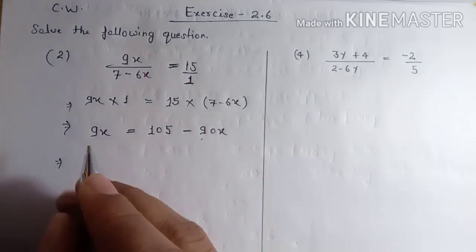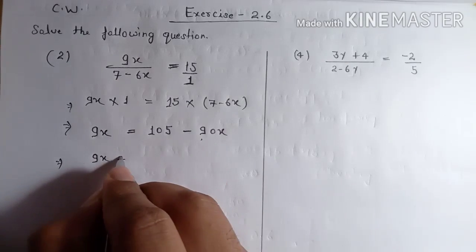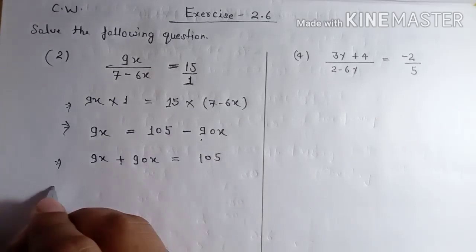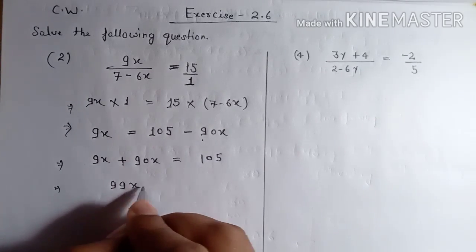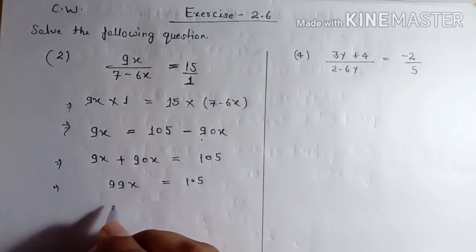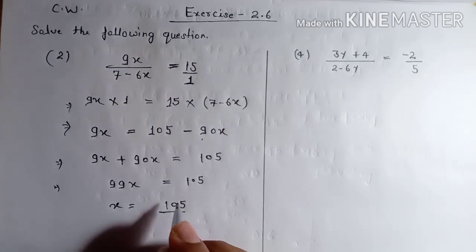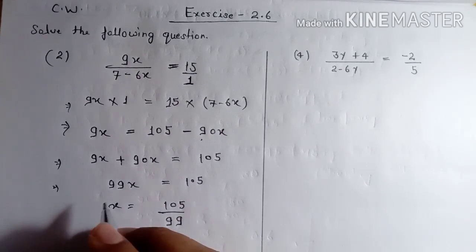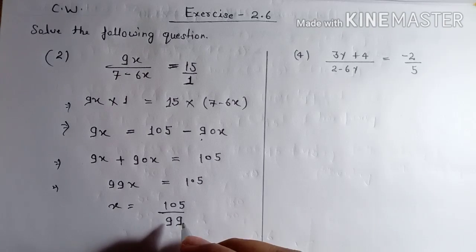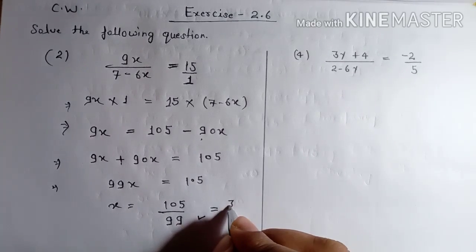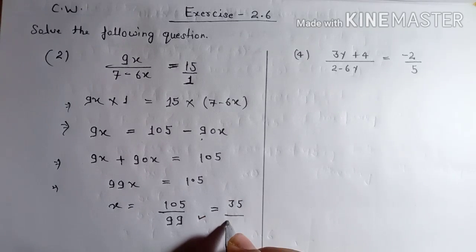These are like terms, so keep aside nine x and transposing minus 90x becomes plus 90x on the left. So 99x is equal to 105. x is equal to 105 divided by 99. You can reduce to lowest form by dividing by three: that gives 35 upon 33. This is your answer.